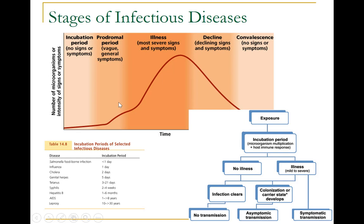The prodromal period, shown here, occurs after the incubation period. During this phase, the pathogen continues to multiply and the host begins to experience general signs and symptoms of illness, which typically result from activation of the immune system, such as fever, pain, soreness, swelling, or inflammation. Usually such signs and symptoms are too general to indicate a particular disease.